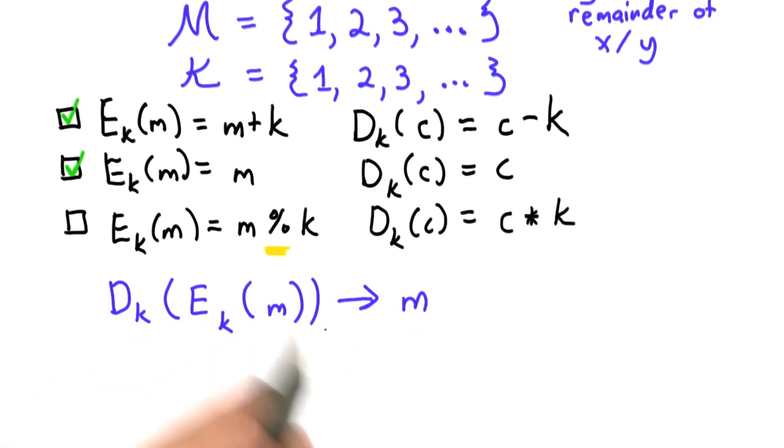And this is what we need for our encryption to be decryptable. We need these functions to be inverses. So for the first choice...